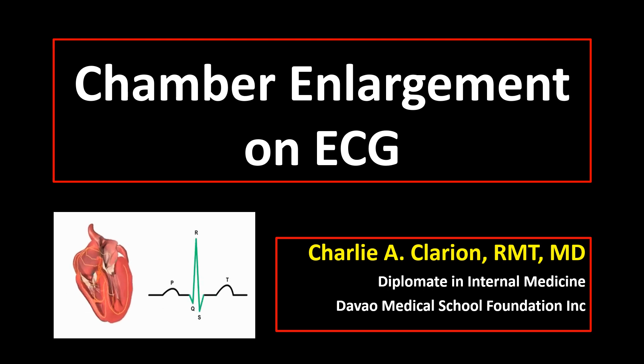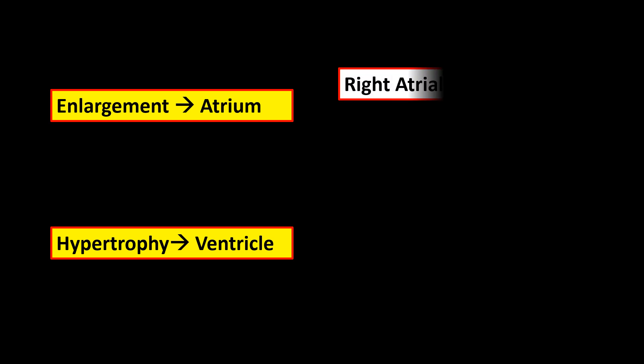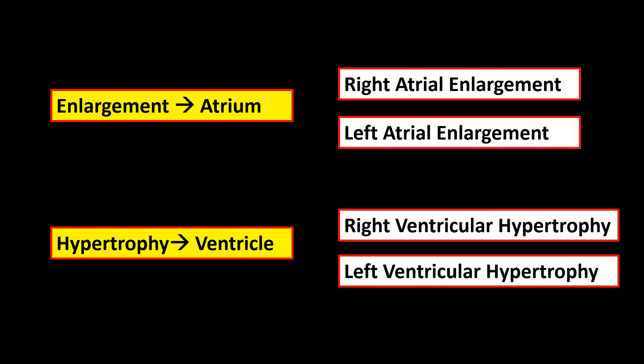Our topic for today is about chamber enlargement on electrocardiogram. We use the term enlargement if we mean atrium and hypertrophy if we pertain to ventricle — so right or left atrial enlargement and right or left ventricular hypertrophy. Take note that several doctors may use the term atrial abnormality instead of atrial enlargement because the ECG criteria for atrial enlargement have less specificity.